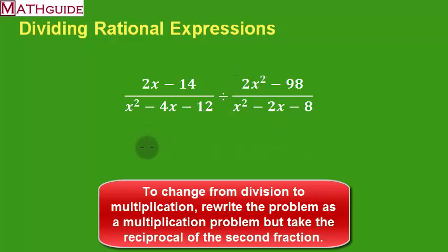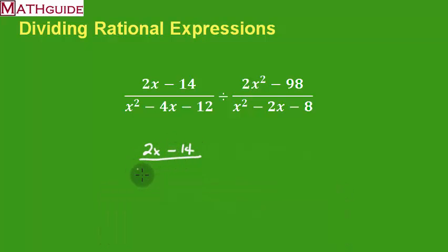In other words, I'm going to leave the first fraction alone. I'm going to leave it 2x minus 14, and I'm going to leave that as x squared minus 4x minus 12. It changes to a multiplication problem, so I'm going to flip it. I'm going to put the denominator in the numerator and the numerator in the new denominator.